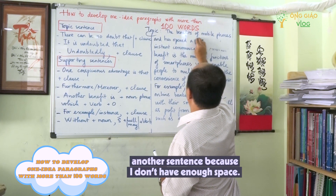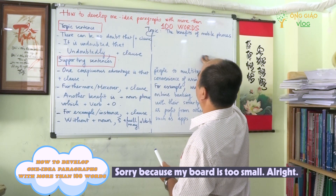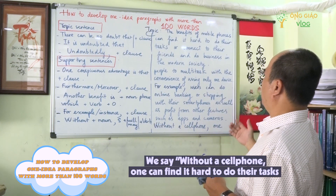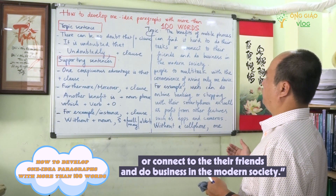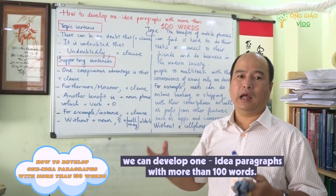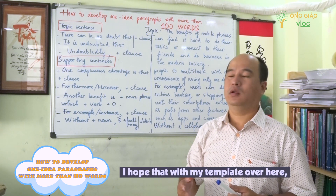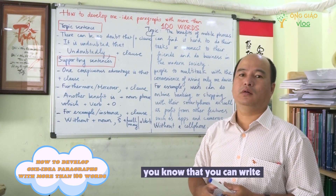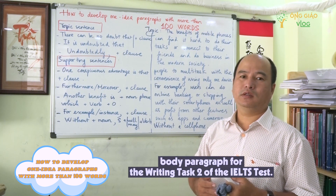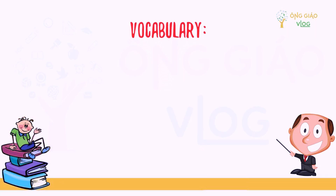We can run another sentence, but we don't have space because the screen is too small. For example: 'Without cell phones, one can find it hard to do their tasks, connect to their friends, and do business in modern society.' That is how we develop a one-idea paragraph with more than 100 words. With this template, you can write a very quick and effective body paragraph for IELTS Writing Task 2. Thank you and see you again.